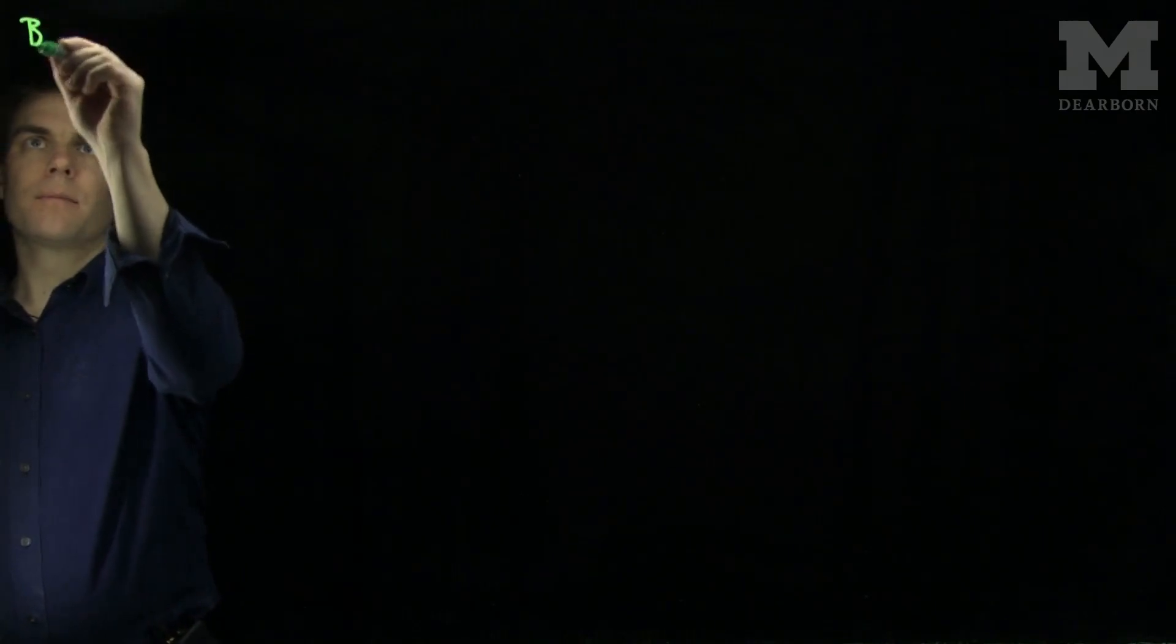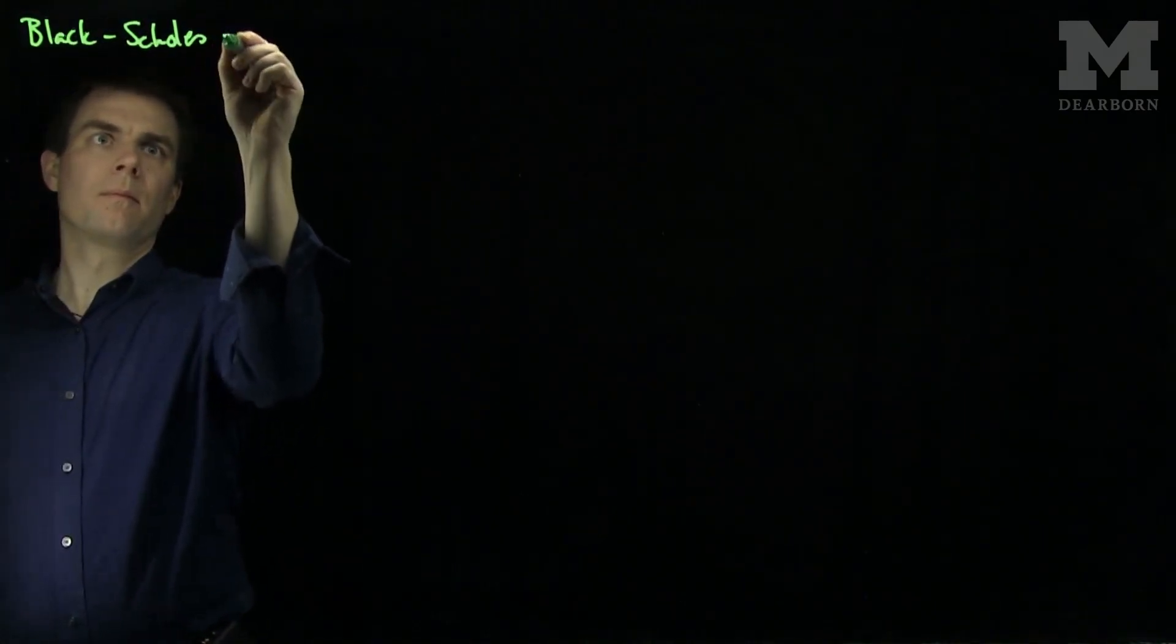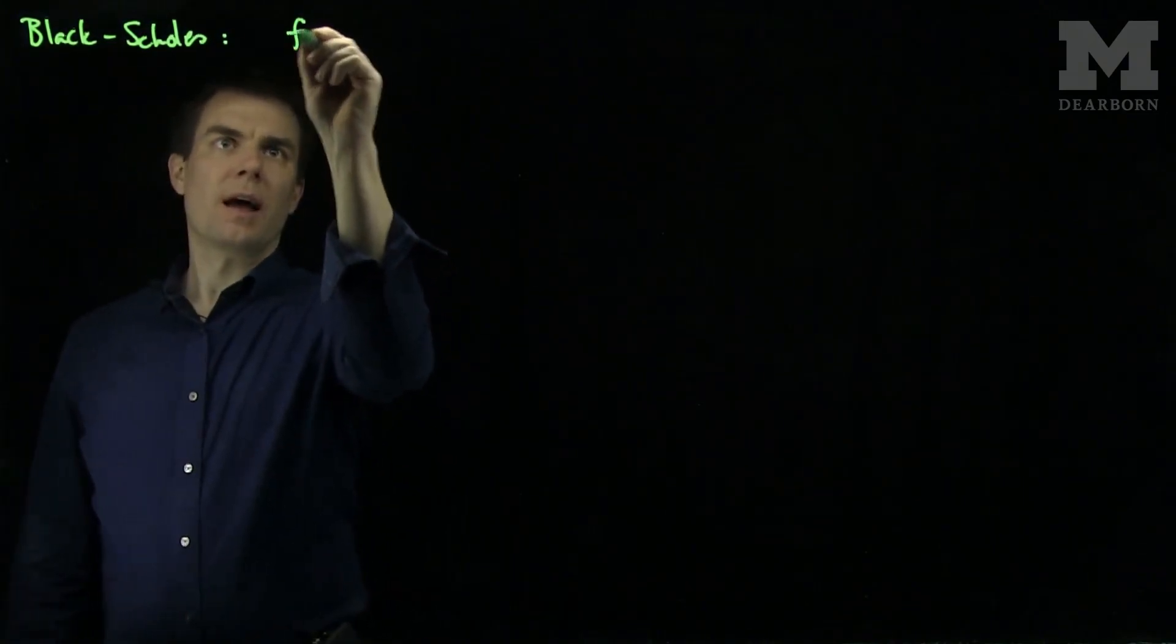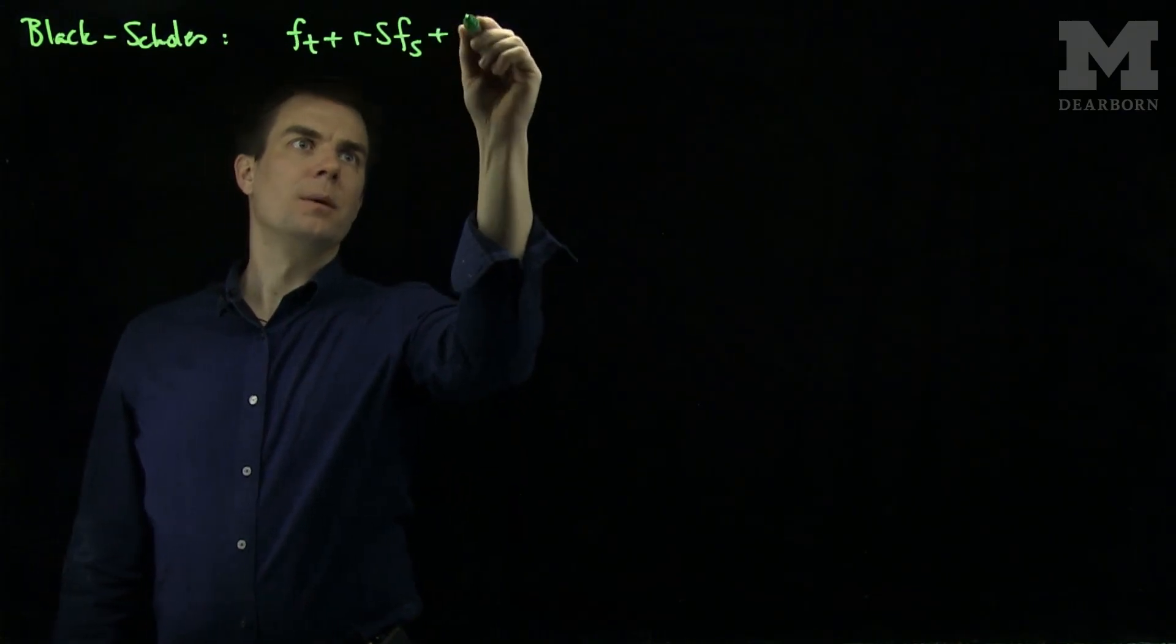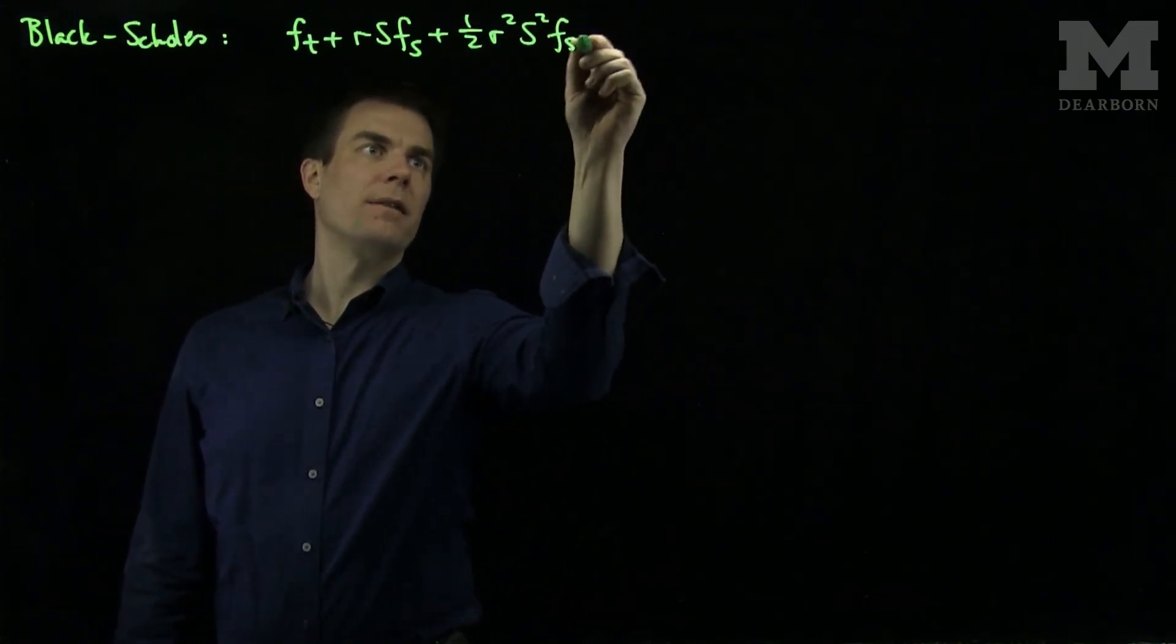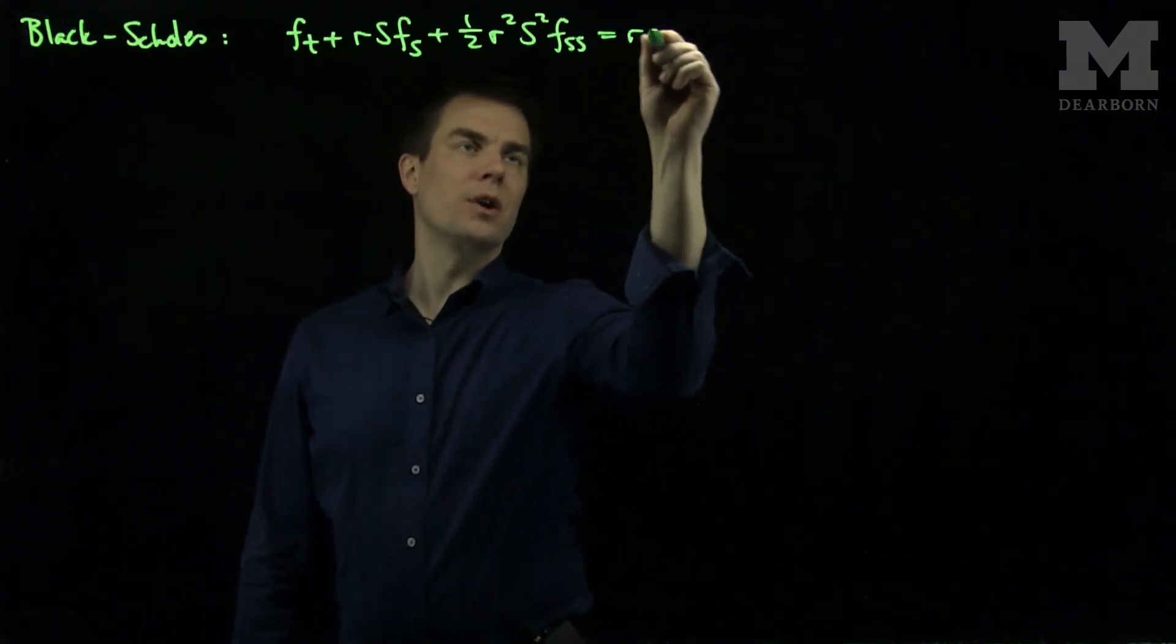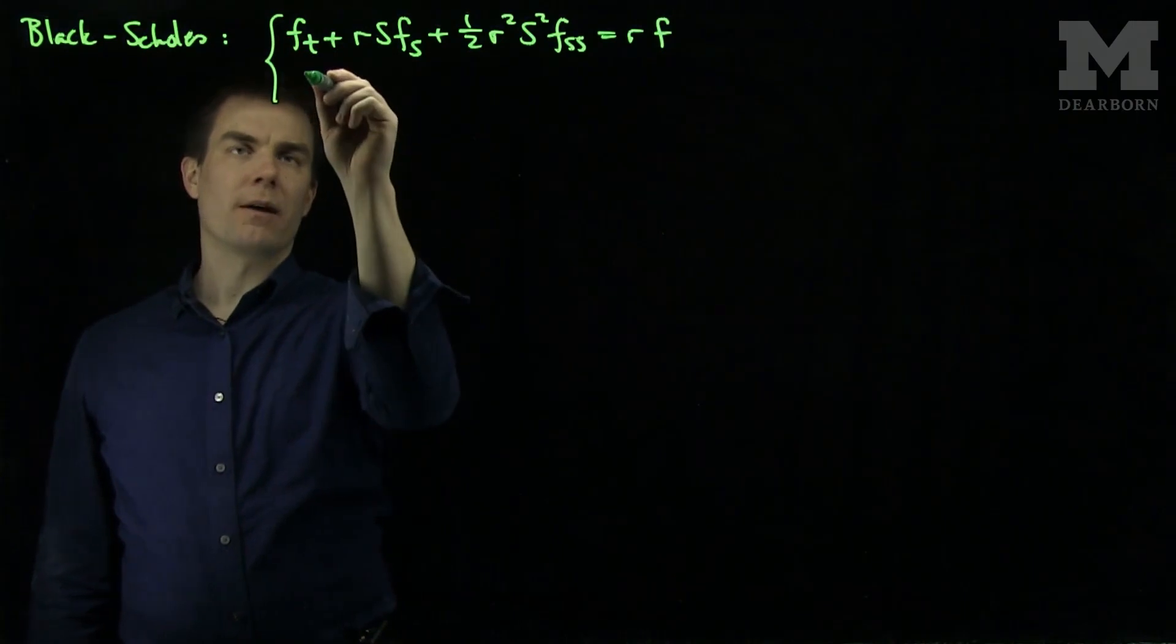Hello students, in this video we'll discuss the Black-Scholes equations for call options. The Black-Scholes PDE is FT plus RSFS plus 1/2 sigma squared S squared FSS equals RF, and we'll always specify a terminal payout for Black-Scholes.